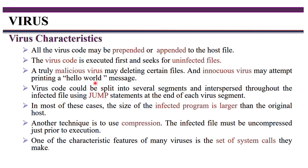After the virus code affects the host file, it starts scattering inside that file using jump statements. The code is split into segments, and each segment is spread throughout the file. Using jump statements, each segment acts as a single virus, and a small segment is enough to infect another file. In this way, a single virus code spreads as multiple virus codes and affects multiple files.